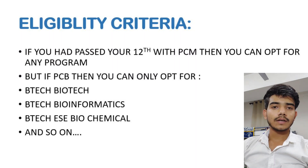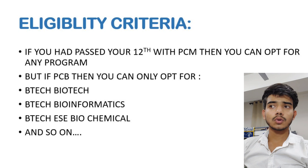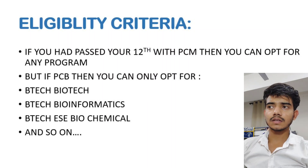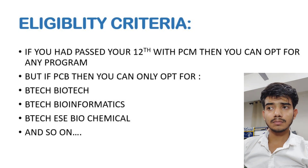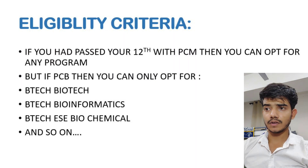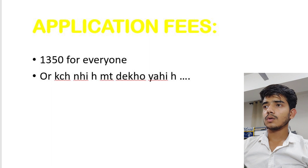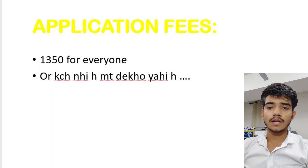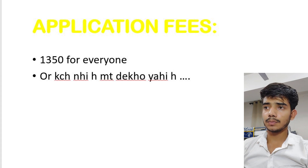If you have PCM in your 12th then you can take any branch in B.Tech. But if you have Biology instead of Mathematics, you can only take these limited branches: B.Tech Biotech, B.Tech CSC Bioinformatics, B.Tech EC Biomedical Engineering, B.Tech Bioengineering, and B.Tech CSC Health Informatics — and only in certain campuses, not every VIT campus. So it's much better to have Mathematics in your intermediate. The application fee is around 1350 rupees for everyone.